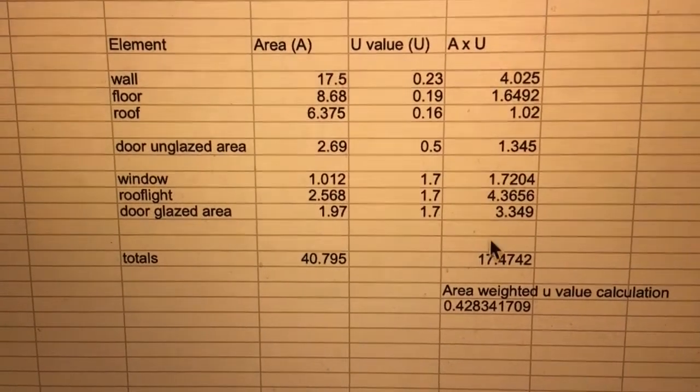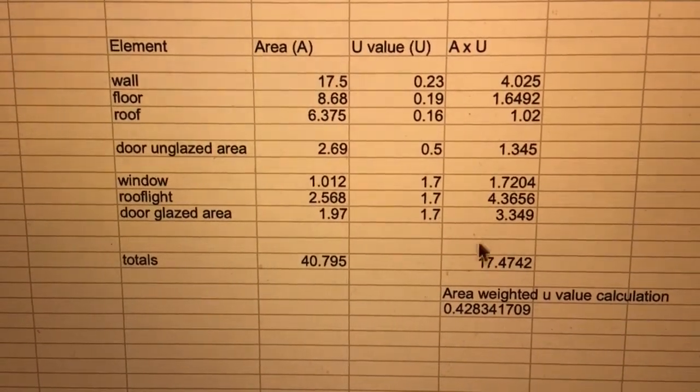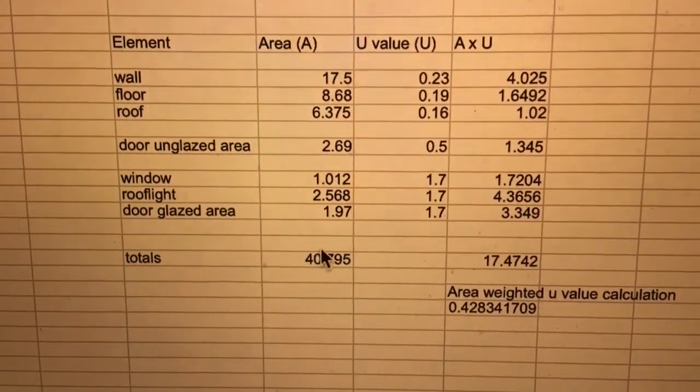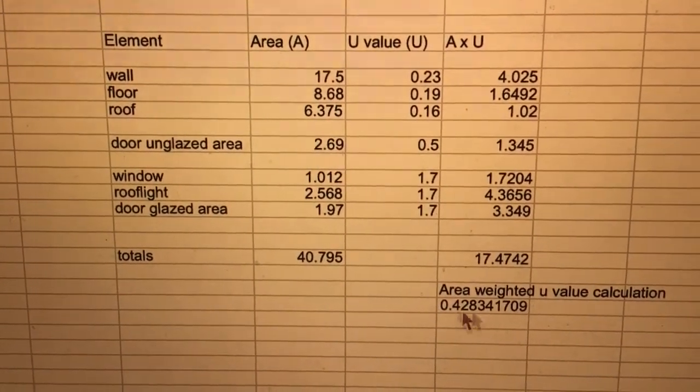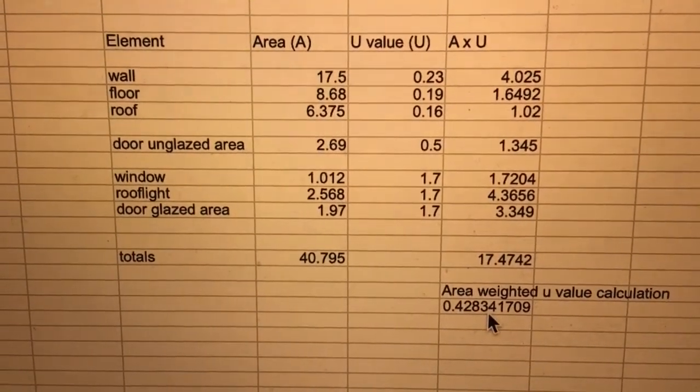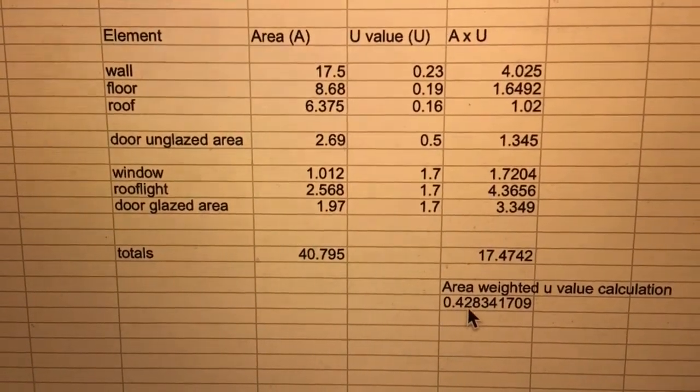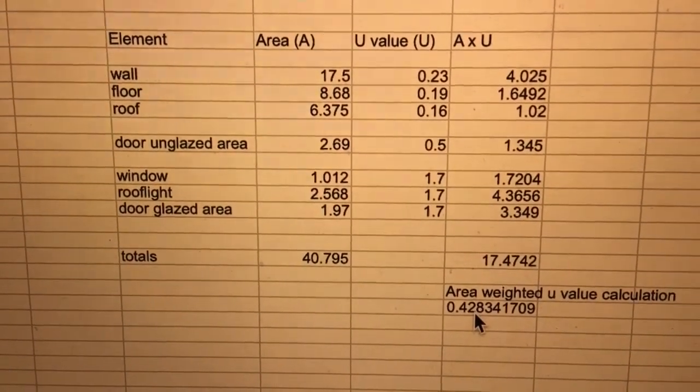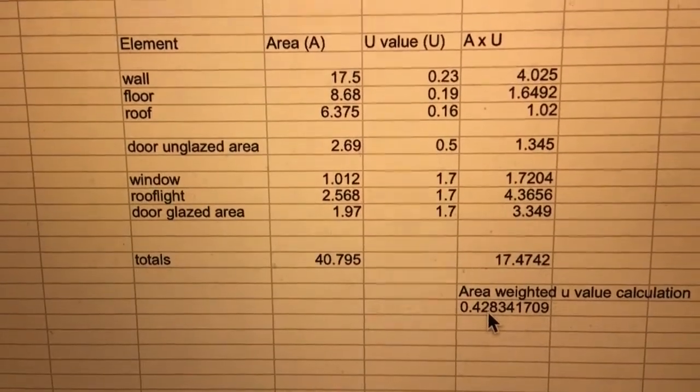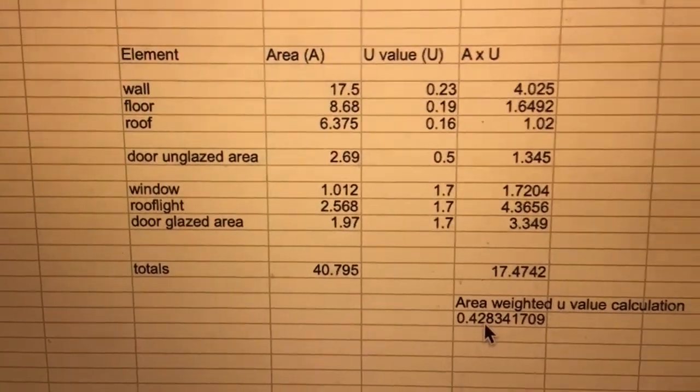I added them all up in the same way as before to get this figure, the total of areas times u-values, and divided through by the total area to give the area-weighted u-value for the extension with the skylight in it. This is 0.43. And remember, the target value was 0.44. So I've done it. That's better than the target value.